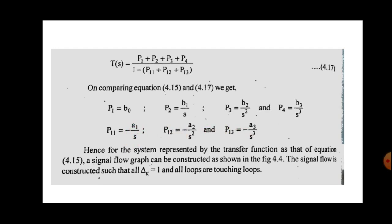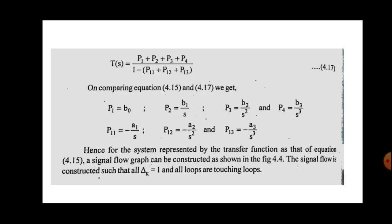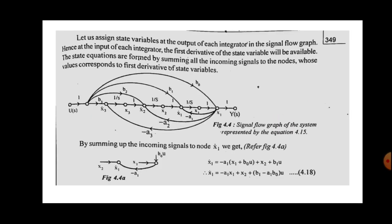We construct a signal flow graph using these parameters. The input is U(s) and output is Y(s), each represented by a node. The input goes directly with gain 1. Since the maximum number of integrators is 3, there will be three integrators represented by state variables: the input to each integrator is a derivative term — x₃-dot, x₂-dot, x₁-dot — and the outputs are x₃, x₂, x₁ respectively.